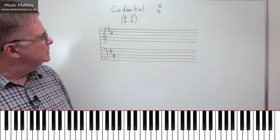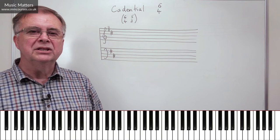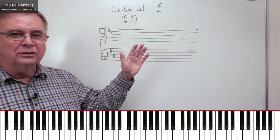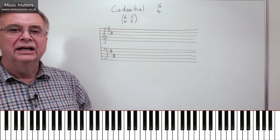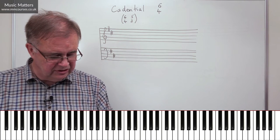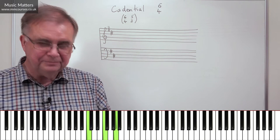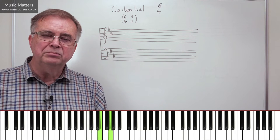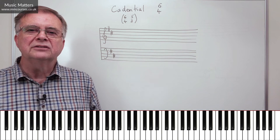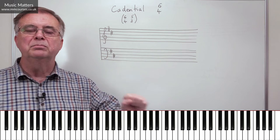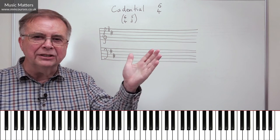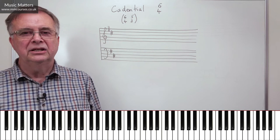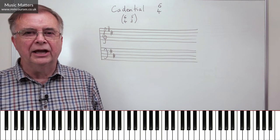The other thing you may have noticed, and this is one thing that makes the cadential 6-4 so attractive to composers, is that the bass note is the same for the 6-4 as it is for the 5-3. So I had C at the bottom, I put 6-4 above it. When I move to 5-3, I've still got the same bass note. So this is why the cadential 6-4 works very nicely, because you can maintain the same bass note, while effectively the 6-4 is one chord, and the 5-3 is another chord, and we'll see how that plays out in just a moment.